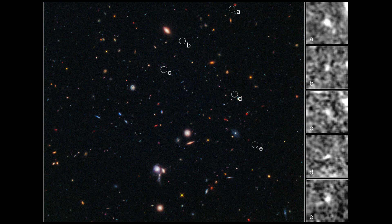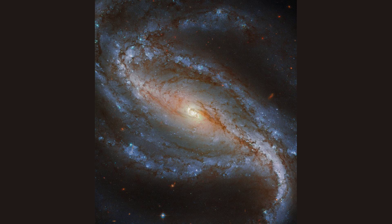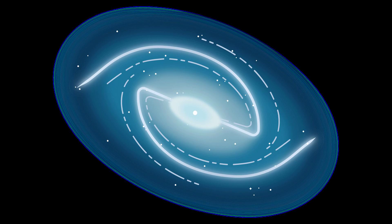Galaxies are colossal structures that contain billions or even trillions of stars along with gas, dust and dark matter. These celestial objects come in various shapes and sizes, ranging from spiral galaxies with elegant arms to elliptical galaxies that appear more like a fuzzy blob. Our understanding of galaxies has come a long way thanks to advancements in technology and the tireless efforts of astronomers.